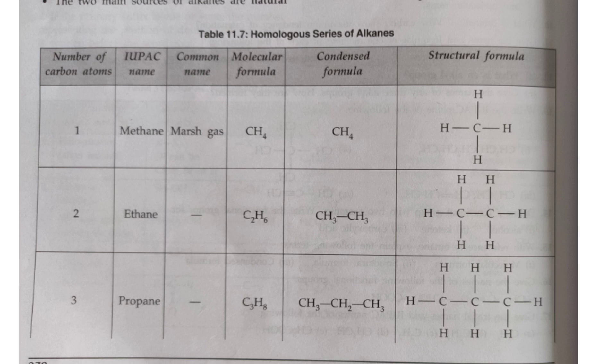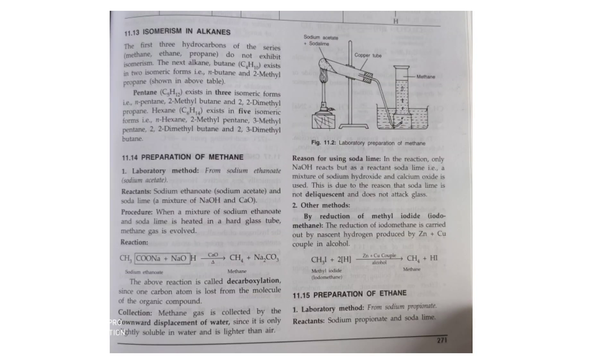Now coming to the homologous series of alkane: the first member is methane, where we have one carbon atom and n is equal to 1. In the same way we have the other members as ethane, propane, butane, etc. The difference between different members of the homologous series of alkane is a general formula of CH₂.